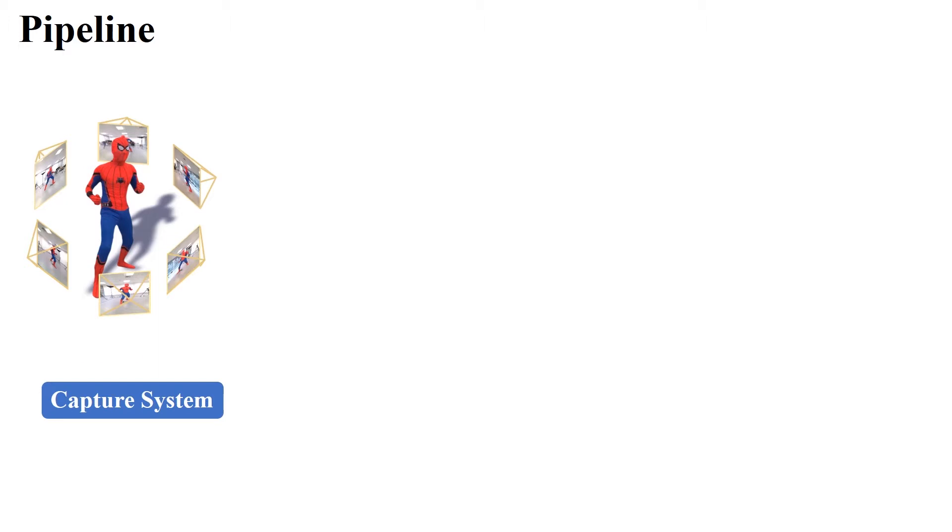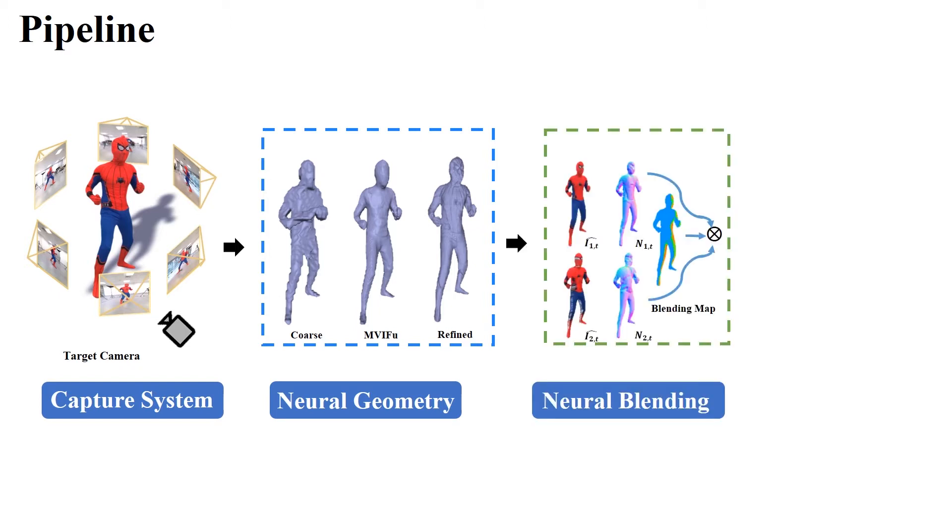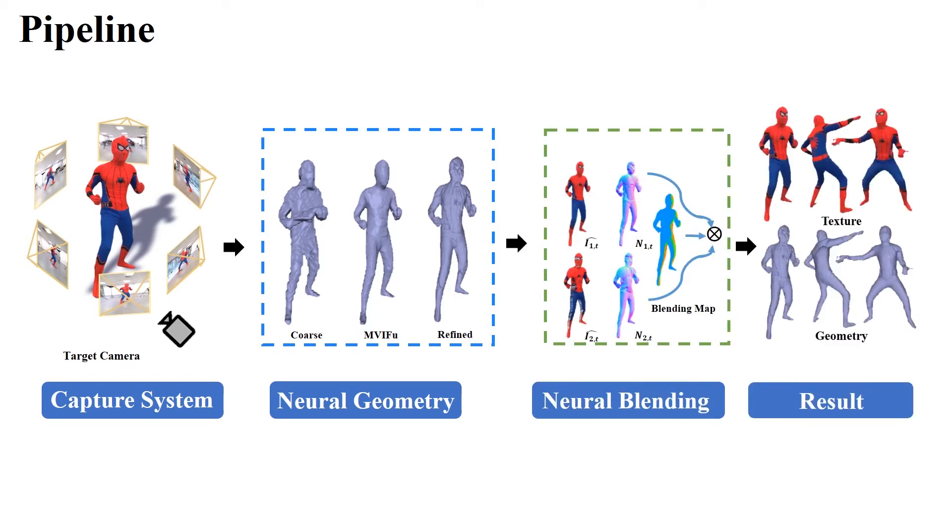The second stage recovers the geometry and target views via a hierarchical strategy in real-time. The third stage blends texture information and normal information from adjacent views to provide high-resolution, photorealistic texture results and fine geometry.